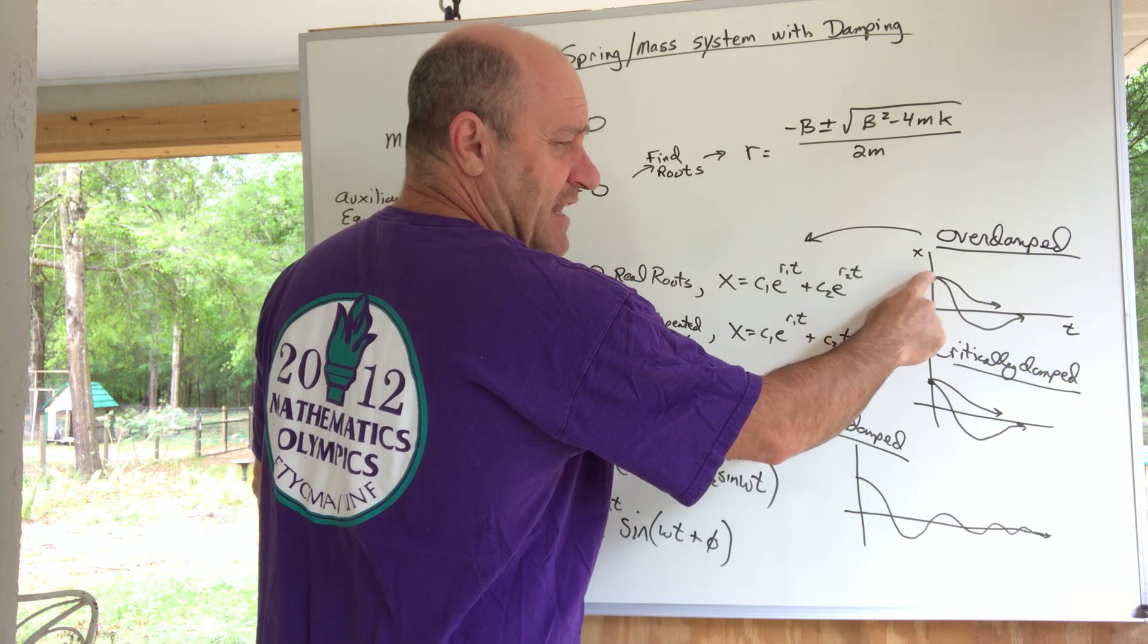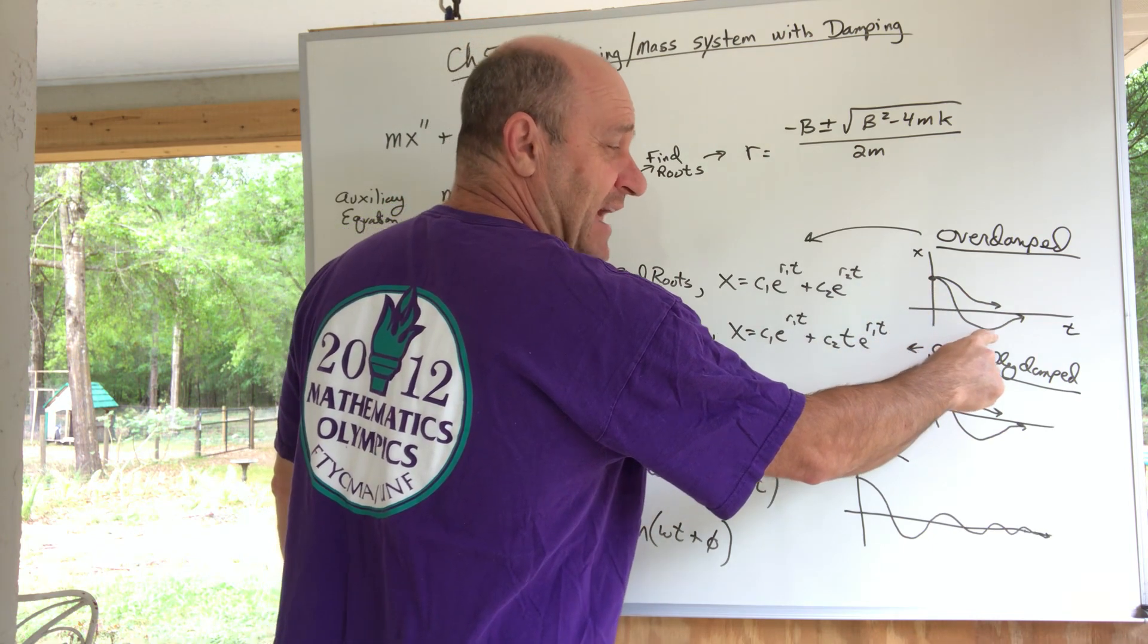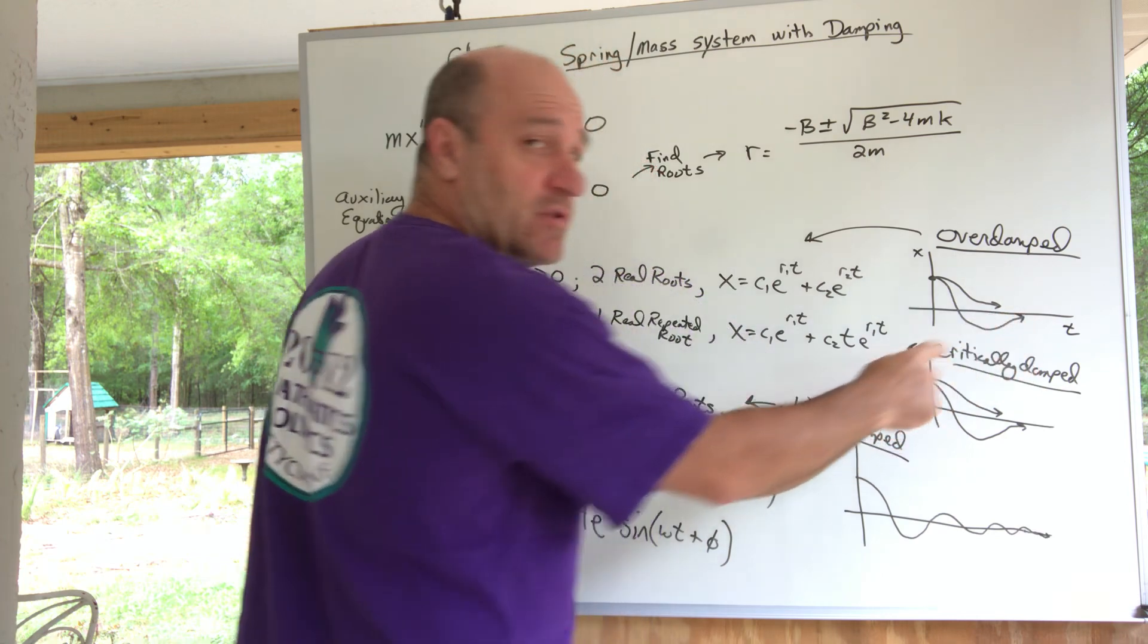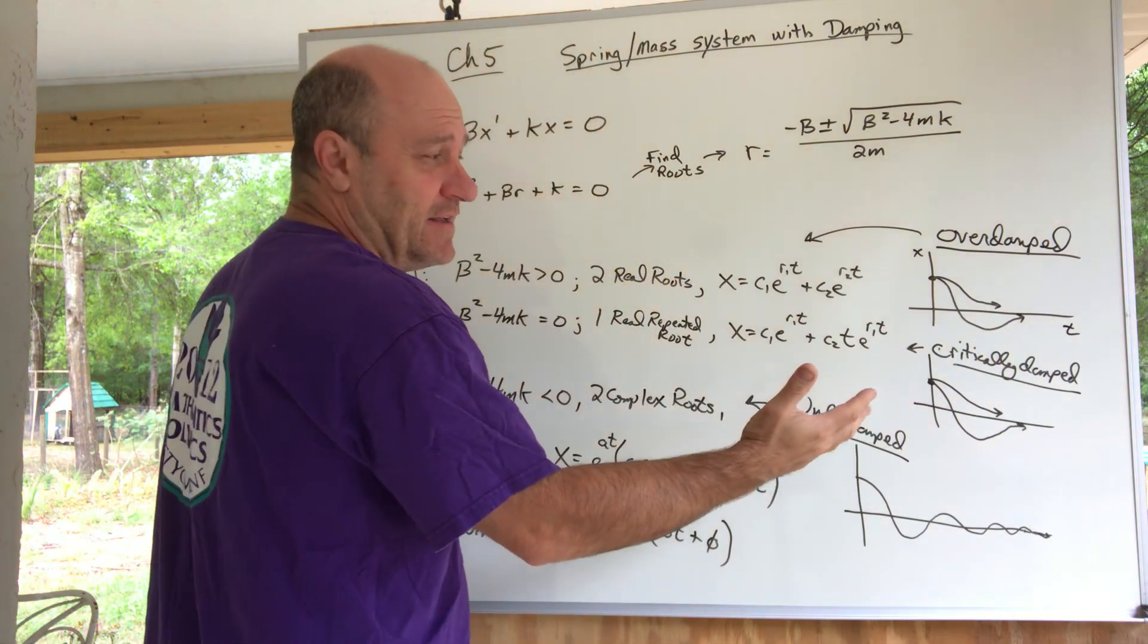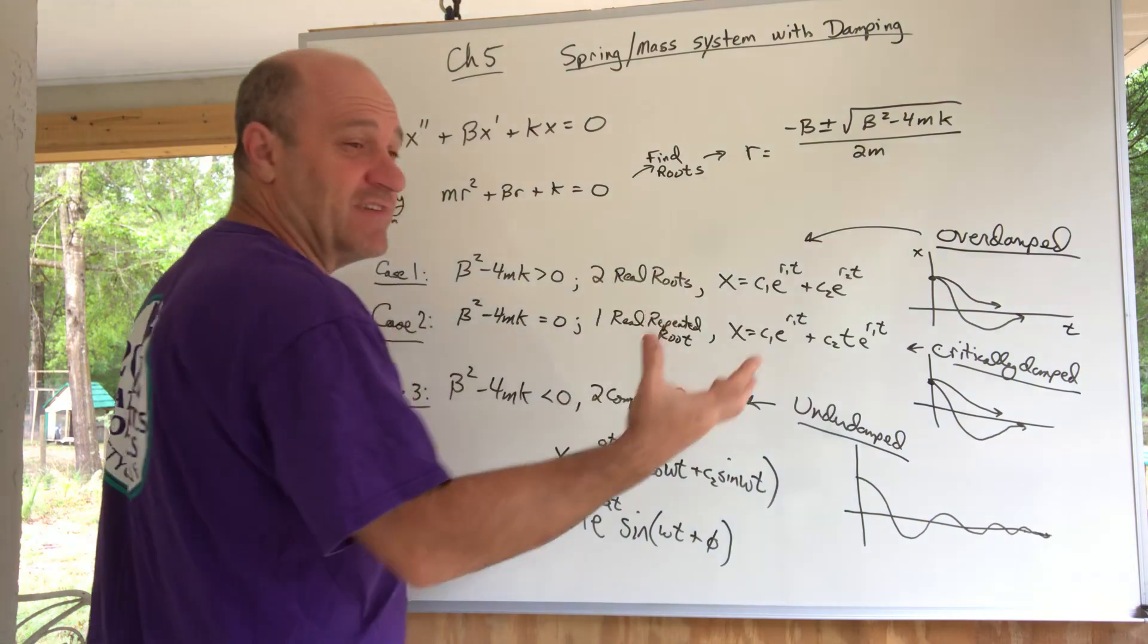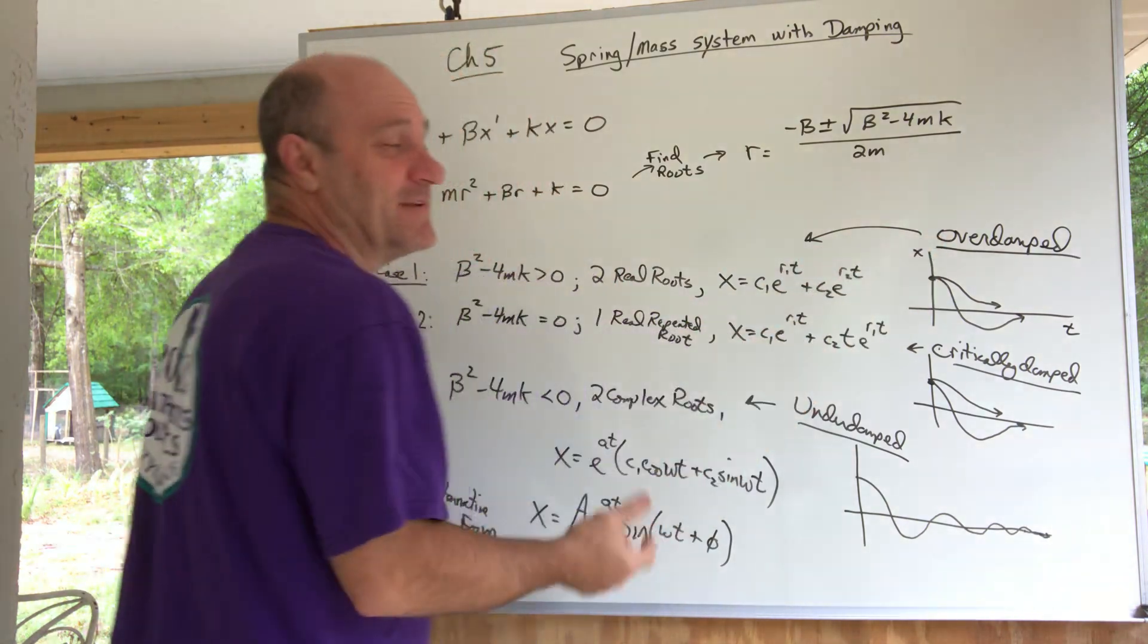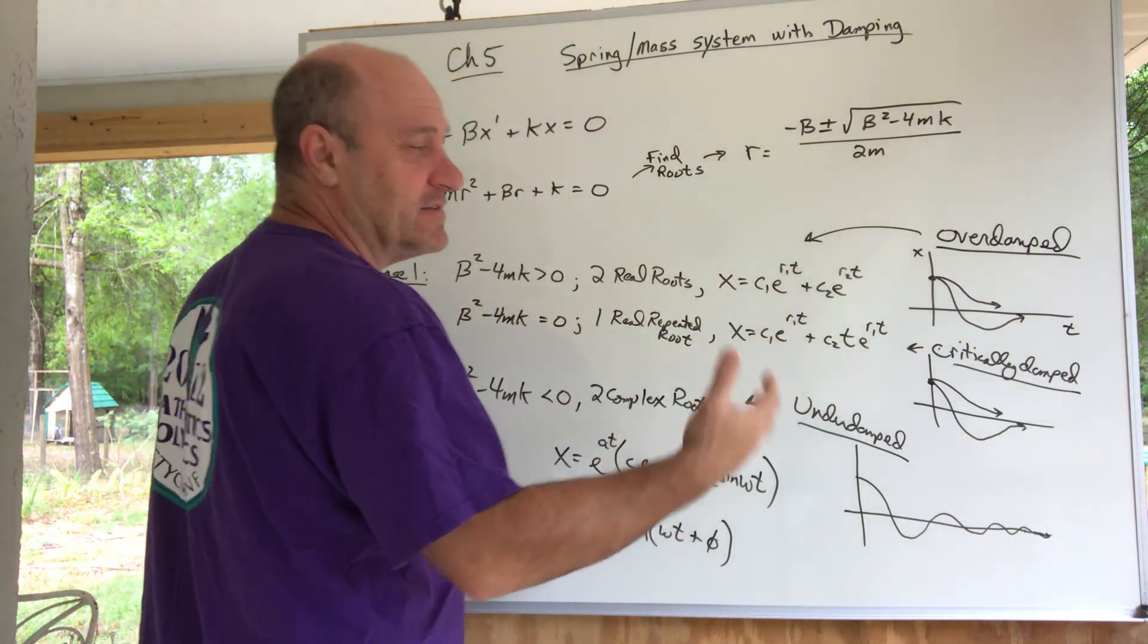The resulting graph is something like this. What happens is you release the mass, and it either passes through equilibrium one time, and then I tell you it never gets back to equilibrium.